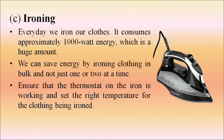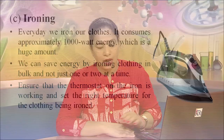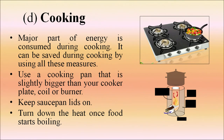For ironing: it consumes approximately 1000 watts, which is a huge amount. Save energy by ironing clothing in bulk and ensuring the thermostat is working at the right temperature. For cooking: use a pan slightly bigger than your cooker coil or burner, keep saucepan lids on, and turn down heat once food starts boiling. Using a washing machine consumes about 20 percent of household electricity.